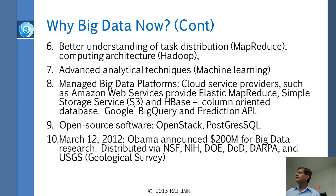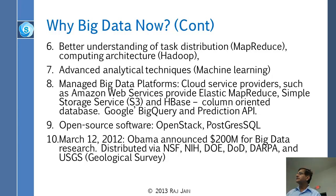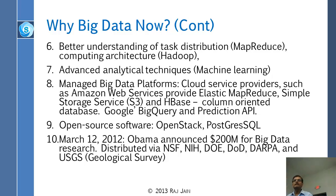The most important reason — the tenth one — is that there is so much money in it. Obama announced $200 million for big data research, so suddenly all professors are working on big data. That funding went to NSF, NIH, DOE, DOD, DARPA, and USCS. Whether you're doing networking, computing, programming, or biology, everybody is working on big data.